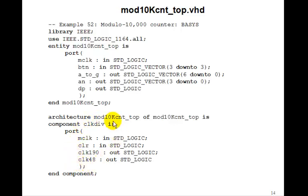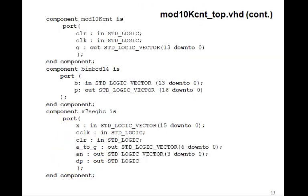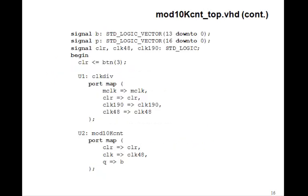Then we'll list our components. Here's the component for clockdiv. Here's the component for mod 10k count. Here's the component for our binary to BCD14. And here's the component for our x7-segBC. And then we just have to port map them up. We'll need a signal B, 14 bits. We'll need a signal P, 17 bits. We'll need signals clear, clock 48, clock 190.